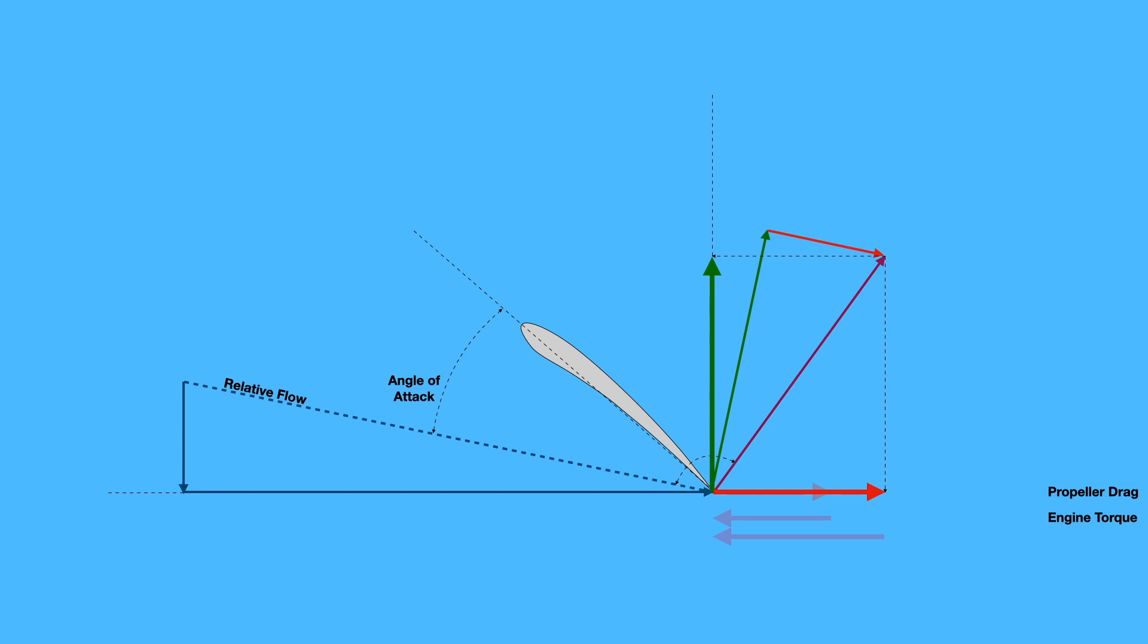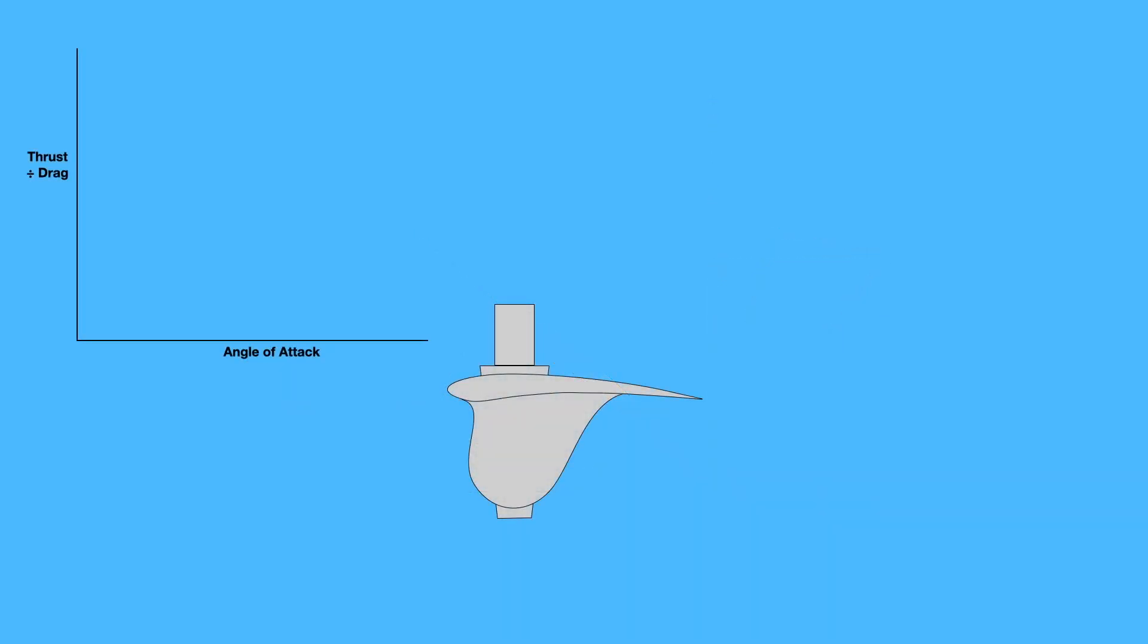It gets slightly more complicated when we start looking at different angles of attack. This graph on the top left shows the relationship between thrust and drag to thrust drag ratio. Now, with no angle of attack, we have very little thrust, but very little drag. As angle of attack of a propeller is increased, we get a gradual increase in the thrust drag ratio, and this increase goes up quite sharply until we get to the optimum angle of attack for the particular blade in question. Eventually, this thrust drag ratio levels off, and with further increases in angle of attack, it decreases, and we get more and more drag without getting any more thrust. In other words, our propeller becomes less and less efficient as the angle of attack goes too high.